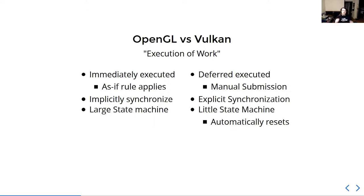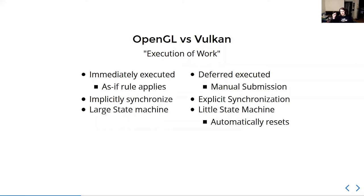For one, nothing is immediately executed. Everything is recorded into lists of things to do and then manually submitted. It's a bit like writing an order for a sandwich — you write out all the ingredients you want, then you give it to the person at the till, and they make your sandwich. In addition, rather than everything being implicit — where the order of commands dictates when something happens — in Vulkan you don't get that nice property. You have to manually say this must happen before this will.